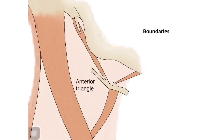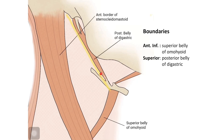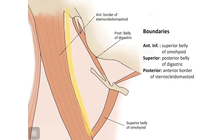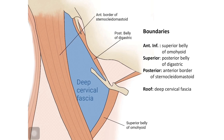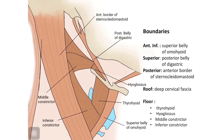The carotid triangle is bounded antero-inferiorly by the superior belly of omohyoid, superiorly by the posterior belly of digastric, and posteriorly by the anterior border of sternocleidomastoid. The roof is formed by the deep cervical fascia. The floor is formed by four muscles: the thyrohyoid, the hyoglossus, the middle constrictor, and the inferior constrictor — listed in an anticlockwise direction.